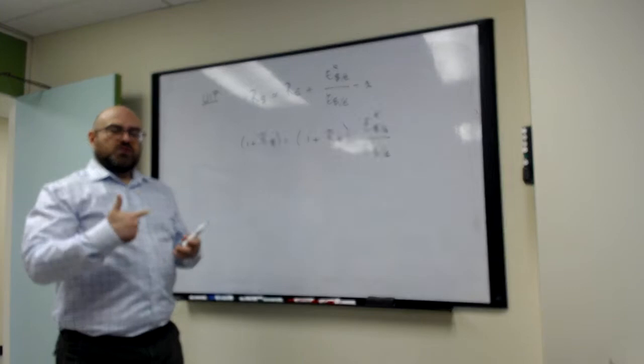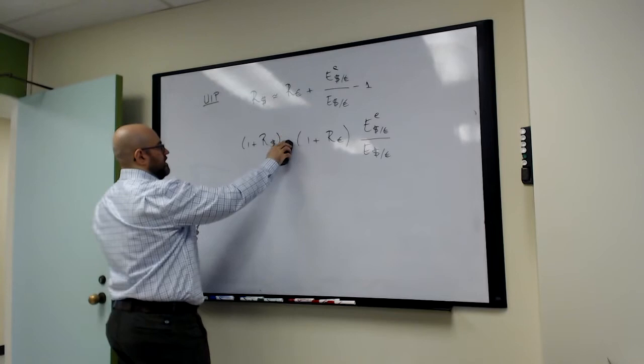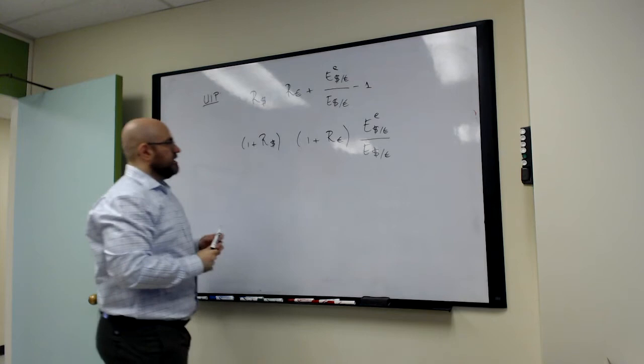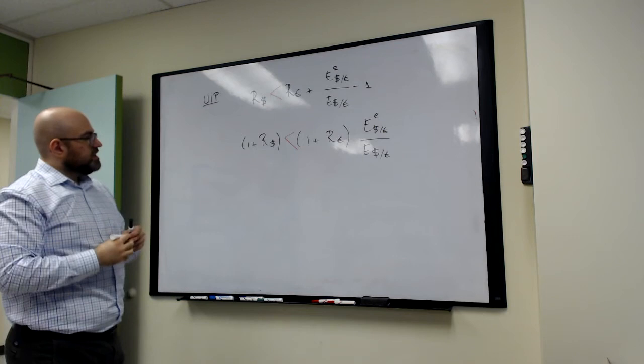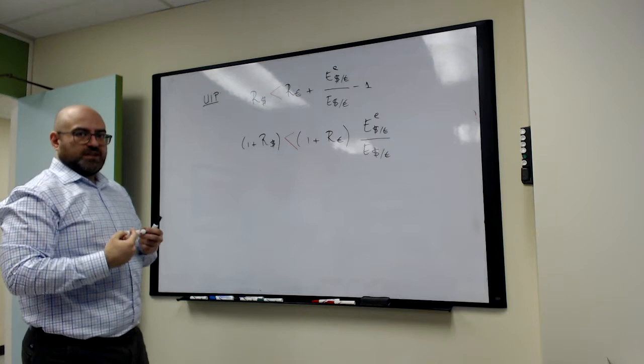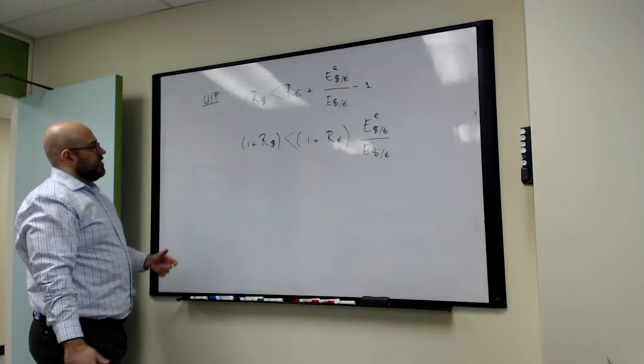Let's look at one example of that. Let's say that the return is greater in Europe. So if the dollar return is greater in Europe than in the US, then there should be a way for us to pocket the interest rate difference, the return differential through a sequence of trades.